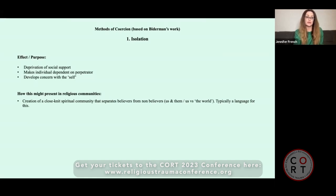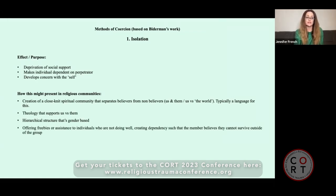This is the first method and the effect and purpose is depriving an individual's social support, which effectively inhibits that person's ability to resist, makes the individual dependent on the perpetrator, and develops an intense concern with self, meaning an individual begins to internalize and monitor themselves according to the rules. So how might this present in religious communities? The creation of a close-knit spiritual community that separates believers from non-believers. There's typically language around this. Theology that supports us versus them. Hierarchical structure that's gender-based. First, offering freebies or assistance to individuals who are not doing well, creating dependency. So this is the key here in terms of the negative element, creating dependency such that the member believes they cannot survive outside of the group.